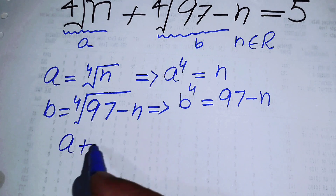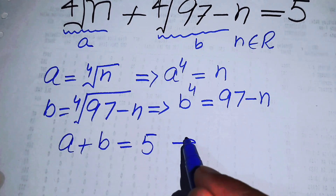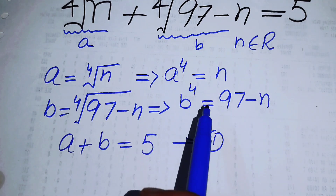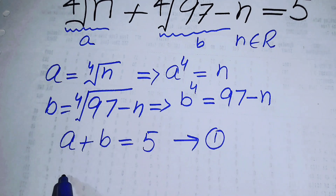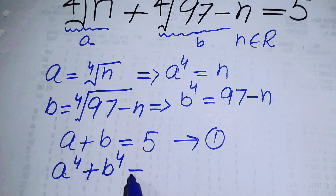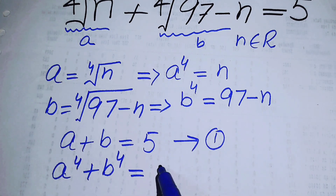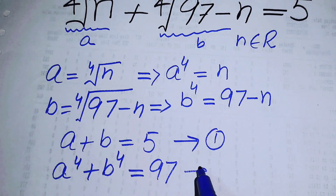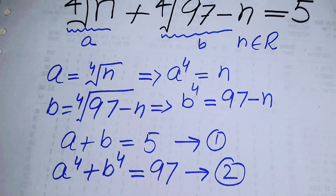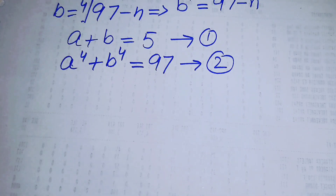We put the values of a and b in the equation, so a plus b equals 5 — we name this equation number 1. When we add the two fourth-power equations, the plus n and minus n cancel, and we obtain a⁴ plus b⁴ equals 97 — we name this equation number 2.